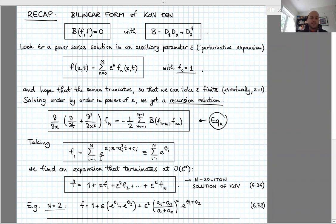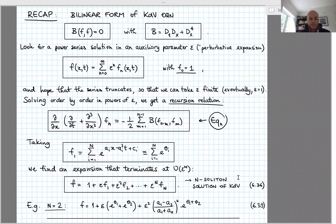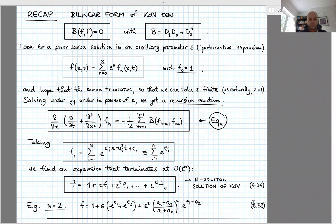Taking that as a solution of equation one, we find the higher coefficients f_n in the power series expansion of f in powers of epsilon, and the expansion terminates at order epsilon to the capital N, where capital N was the number of summands in the expression for f1. When you plug it back into the original KDV equation, this is nothing but the N-soliton solution. At the end of the last lecture we specialized to capital N equal to two, giving the two-soliton solution in equation 6.39, which we analyzed further in the problems class.